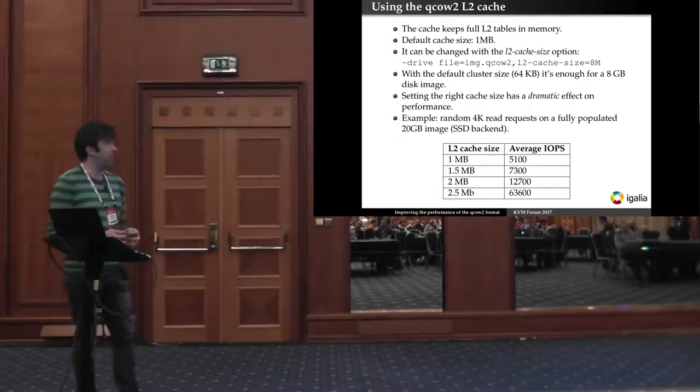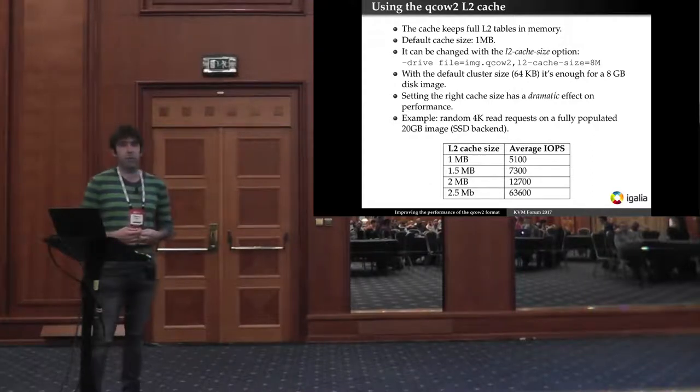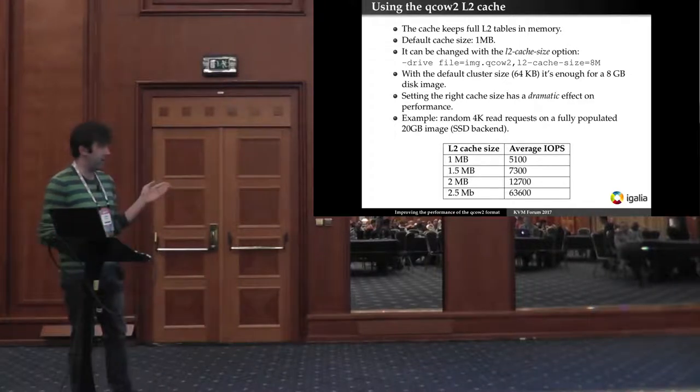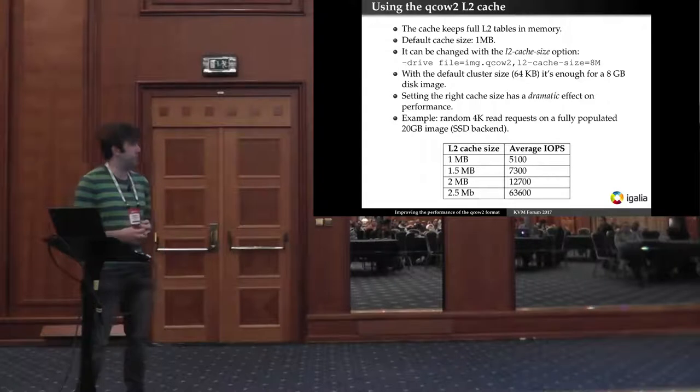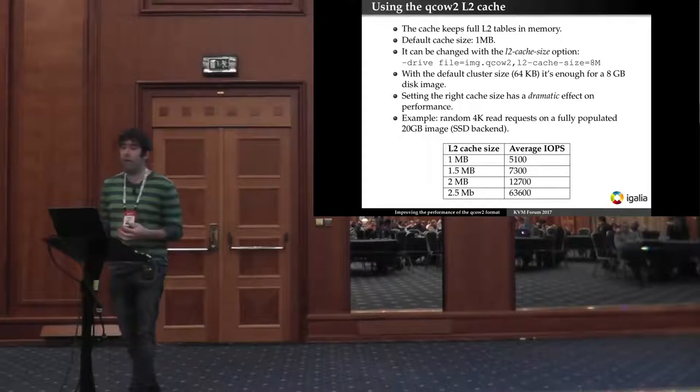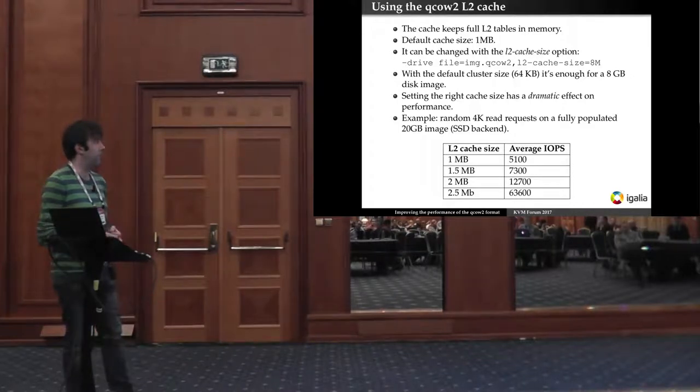This table I made it with a 20 gigabyte image fully populated and the last row with the 2.5 megabytes of cache that's the maximum amount of cache that you need for this kind of for this image size. So that's the performance that you see there. It's around 64,000 IOPs. That's what you get more or less with raw files. So in this case the QCOW2 is comparable to a raw file. However if the cache size is smaller as you can see the performance is a fraction of that. So you really need to increase the cache size if you want to get good performance here.